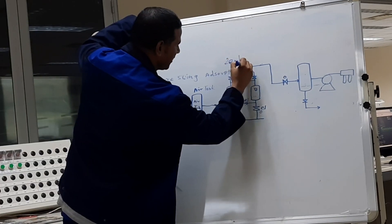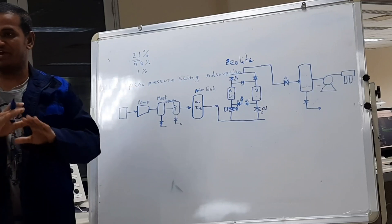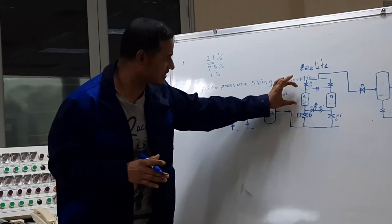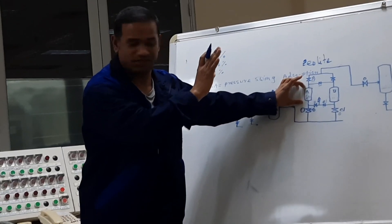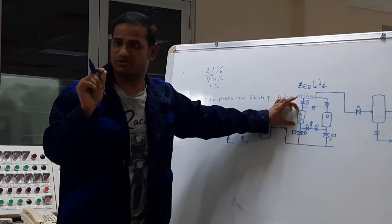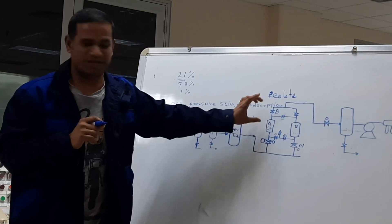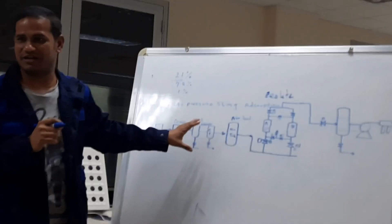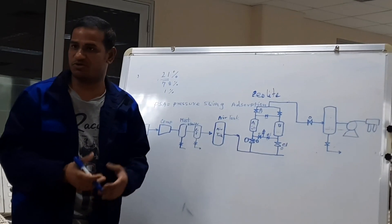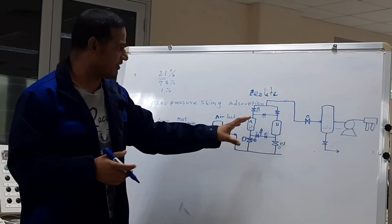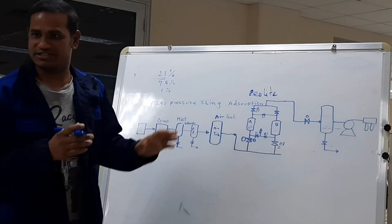With zeolite molecular sieve, if we use it in the plant instead of carbon molecular sieve, it is possible to produce oxygen for COVID-19 patients. Most existing plants use nitrogen plants and not oxygen plants. But nowadays COVID-19 is causing damage and many people are dying. I suggest to everyone: if anyone wants, they can start this plant. The cost is also very low — they can start easily.